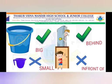Tick the big object and cross the small object. Bucket and Mug. Your bucket is the big object. So students, we will put a tick mark on bucket.